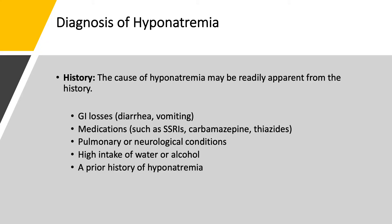What about diagnosis of hyponatremia? As with anything else, we need a history, a physical exam, and some laboratory testing. The cause of hyponatremia usually can be deduced from taking a good history. Sometimes it's very obvious: GI losses, diarrhea, vomiting. The patient may be on a medication like an SSRI—sertraline, paroxetine, carbamazepine—or a thiazide-type diuretic. Sometimes there is a clear pulmonary or neurological disorder such as subarachnoid hemorrhage or pneumonia, or a clear history of high intake of water or alcohol. A prior history or prior labs indicating whether this is chronic, acute, or recurrent are very helpful. Recurring hyponatremia can be a clue to a diagnosis of SIADH.